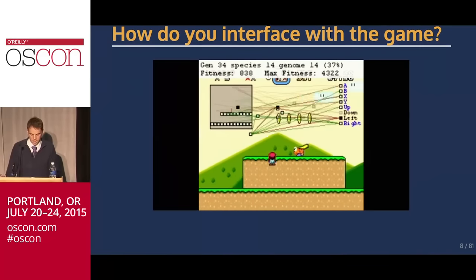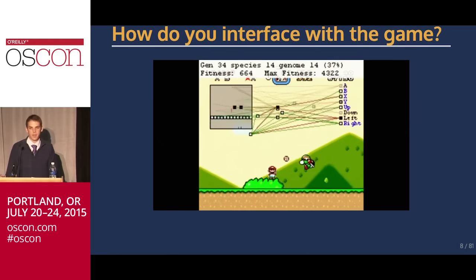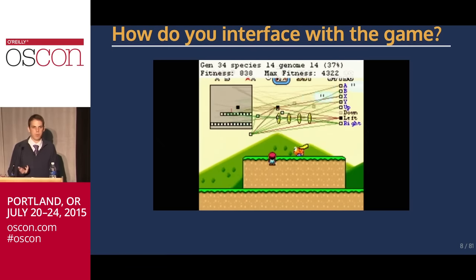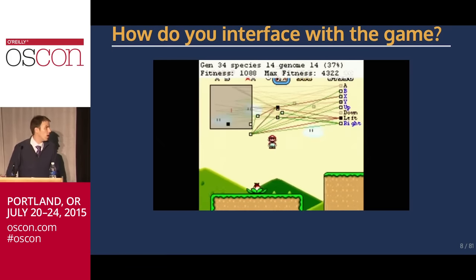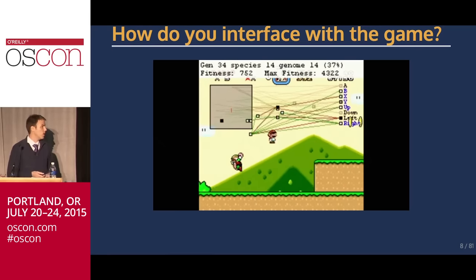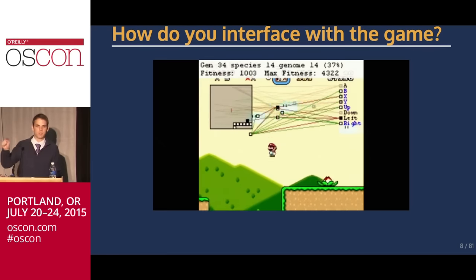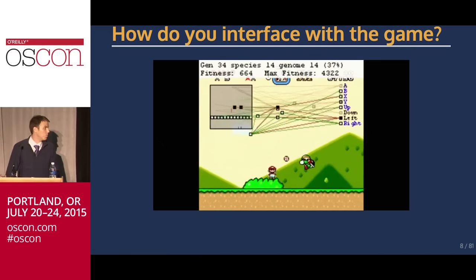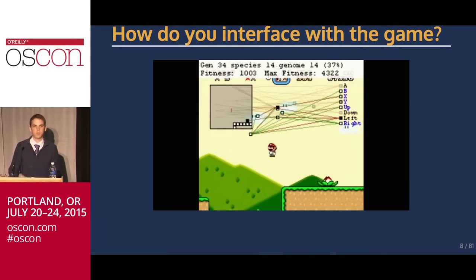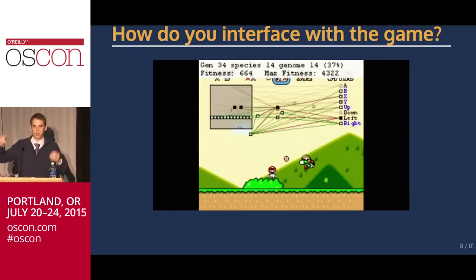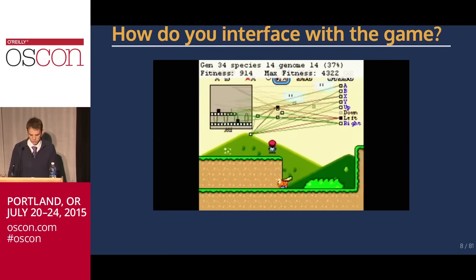So next it was: how am I going to interface with this game? For example, people playing Super Mario through an emulator have to simulate button presses — A and B buttons and so on. I didn't want to have to do that. I didn't want to simulate mouse clicks on screen. It seemed tedious, error-prone, and slow if you have to bring up a UI and everything.